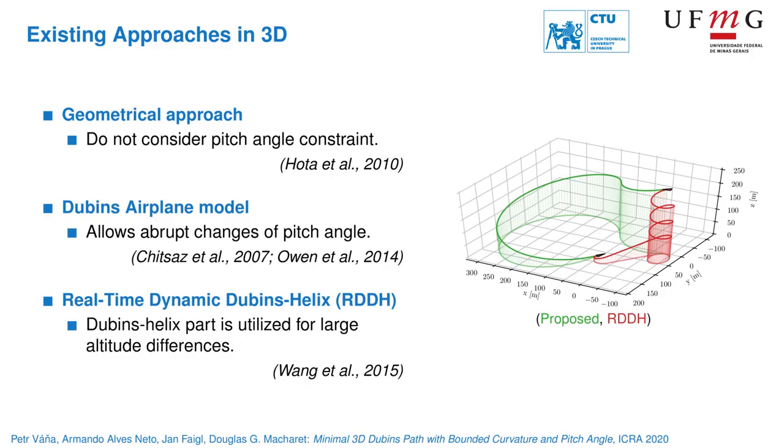An example of such path is shown as a red line together with the proposed 3D Dubins path in green.